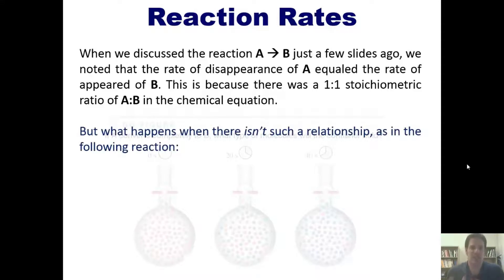such as in this example where I have two moles of hydroiodic acid converting into one mole of hydrogen gas and one mole of iodine gas. How do we calculate the rate of conversion in that type of scenario?